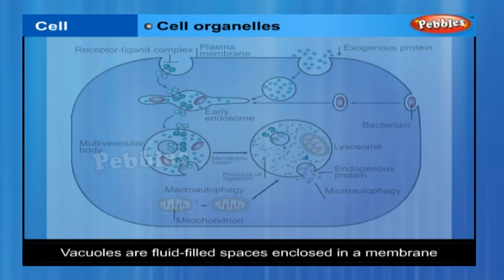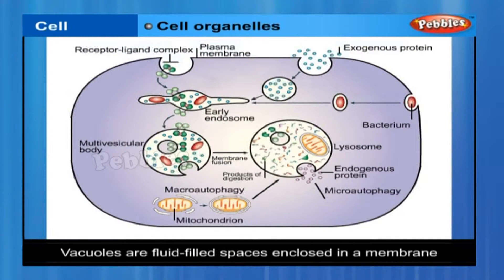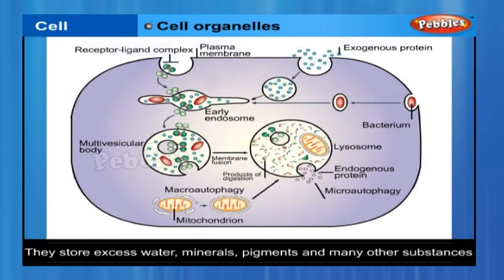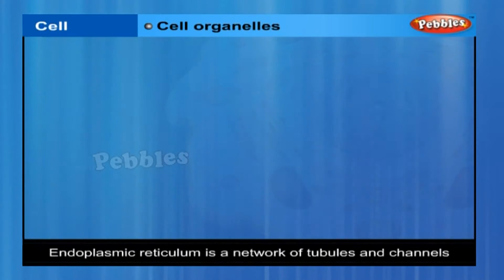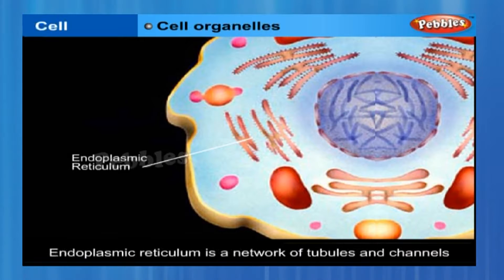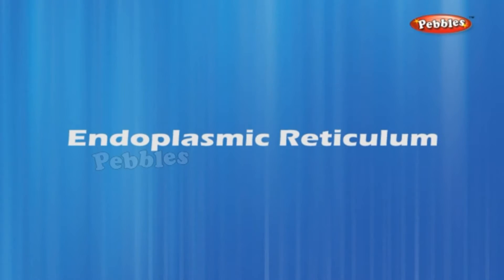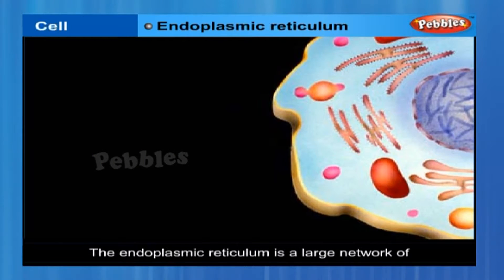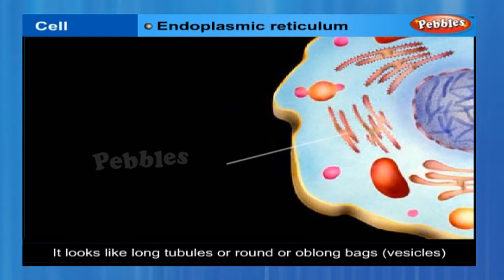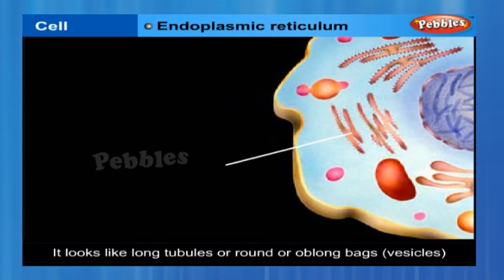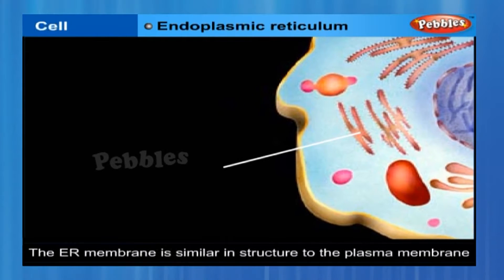Vacuoles are fluid-filled spaces enclosed in a membrane. They store excess water, useful minerals, pigments and many other substances. Endoplasmic reticulum is a network of tubules and channels involved in the synthesis, storage and transport of cell products. It is a large network of membrane-bound tubes and sheets, looking like long tubules or round or oblong bags called vesicles. The ER membrane is similar in structure to the plasma membrane.